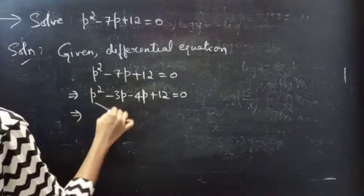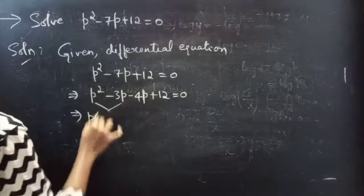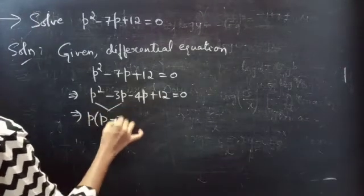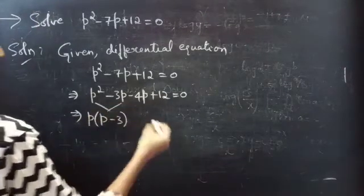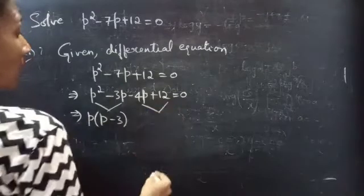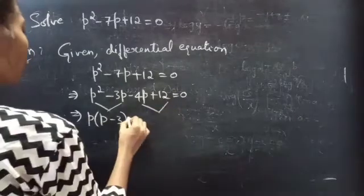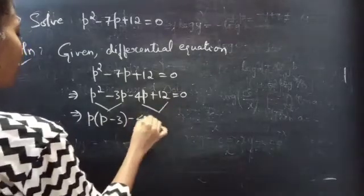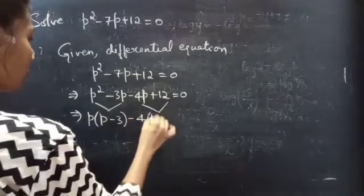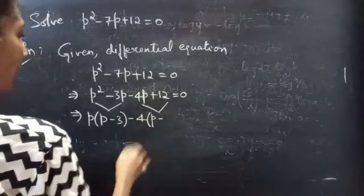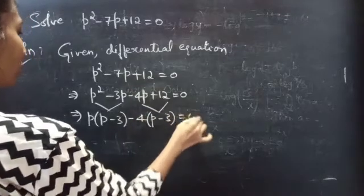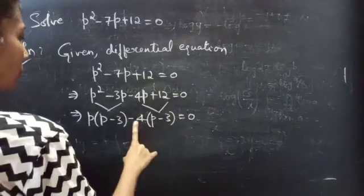Now, take P common from the first two terms, we will get P times (P minus 3). And take minus 4 common from the next two terms, we will get minus 4 times (P minus 3) equals to 0.